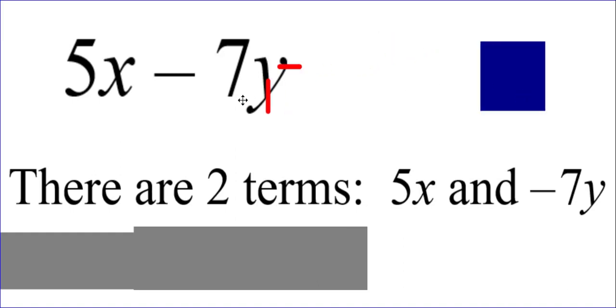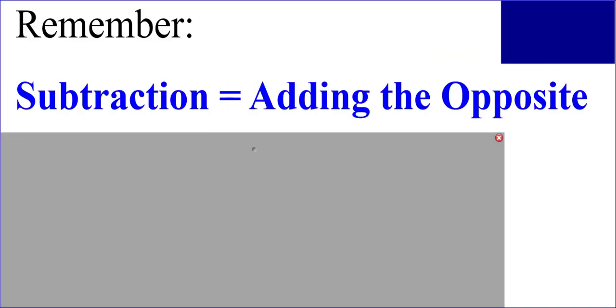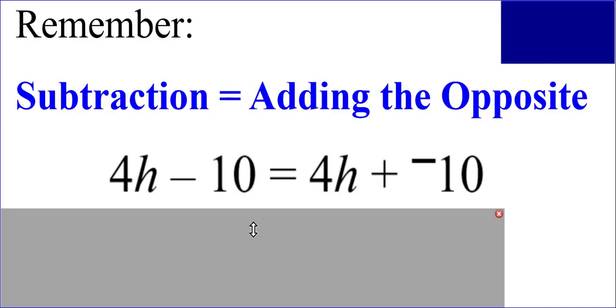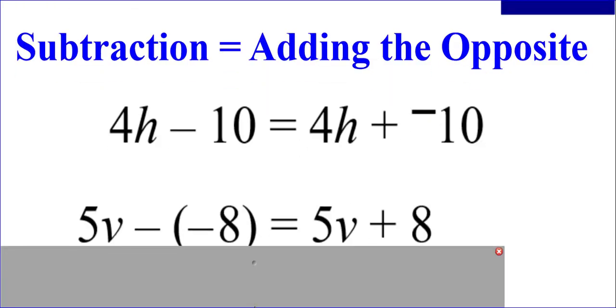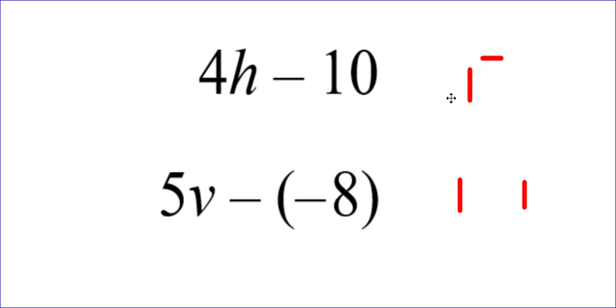It's because I made subtraction become adding the opposite. Remember, subtraction is the same as adding the opposite. So if you have 4H minus 10, that's the same as 4H plus negative 10. If you have 5V minus negative 8, that's the same as 5E plus positive 8. And so as we've learned before, you can always take a subtraction problem and make it adding the opposite by using two slashes. One slash making subtraction become addition, and the next slash making the very next number to the right become its opposite sign.